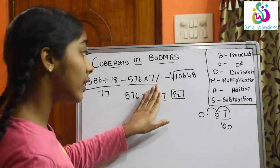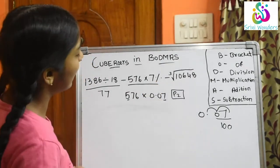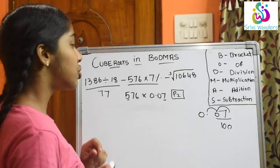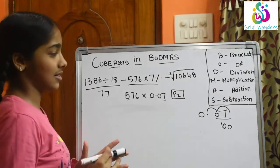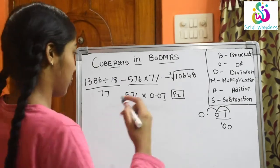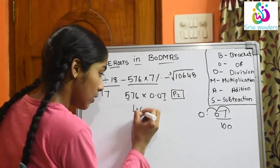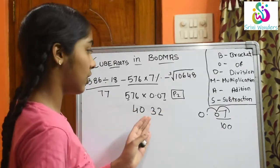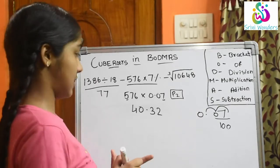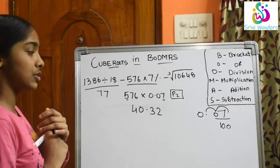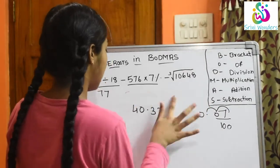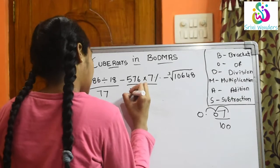We will ignore the decimal point and multiply. So if we ignore the decimal point we get 576 into 7. The answer is 4032. So 4032 placed in P2 position gives us 40.32. So 576 into 7% is 40.32.